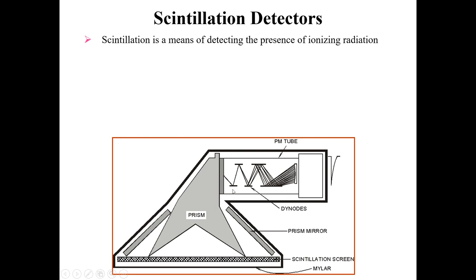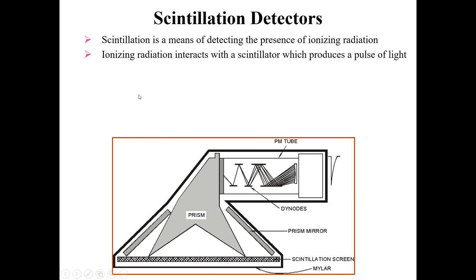So what is meant by scintillation? Scintillation is a means of detecting the presence of ionizing radiations. Ionizing radiation is radiation that produces ionization in gases — for example, alpha particles or beta particles. In this kind of detector, ionizing radiations interact with the scintillator, which is normally an element or a compound. This interaction produces a pulse of light.